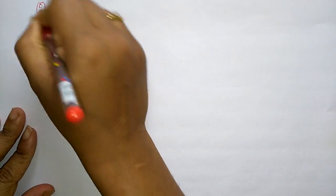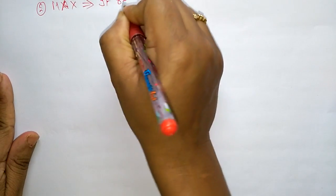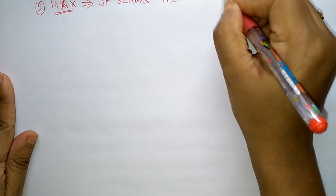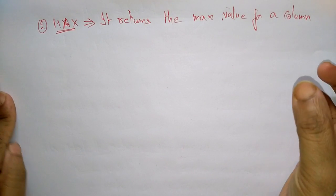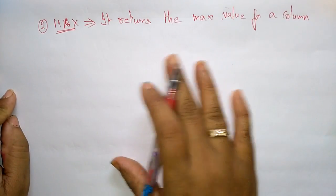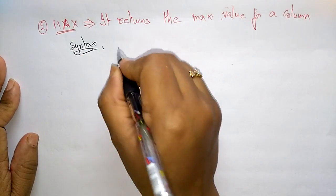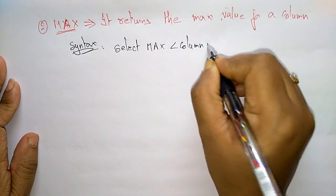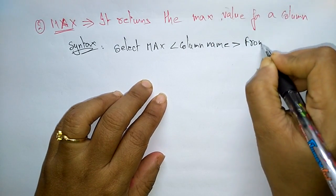The next aggregate function is MAX. This function returns the maximum value for a column — from a given column in a table, the maximum value is returned. The syntax is: SELECT MAX(column_name) FROM table_name.